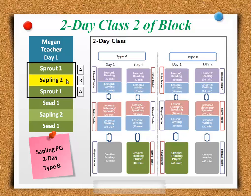Sapling 2 is the second class in the block, and we have the first class and the second class in the block — bilingual teacher. So you can know that you'll be teaching them listening and speaking and then writing. You can turn over your Program Guide and look for the list of components that you'll teach them.